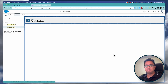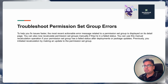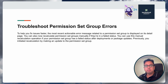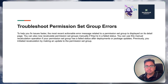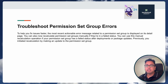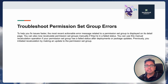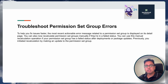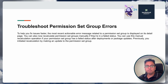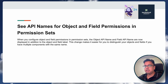The next feature is called 'Troubleshoot Permission Set Group Errors.' A permission set group is a collection of permission sets. When you add or remove a permission set from a group, sometimes there is an error because recalculation didn't happen properly. With this feature, every time you see an error on the permission set group, there will be a Recalculate button at the very top. Clicking it lets you force-initiate a recalculation of the entire permission set group's permissions.